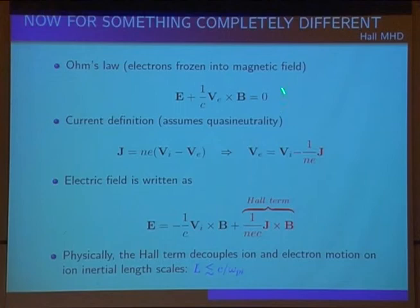So what the Hall term does is it decouples the ions from the electrons. You assume that the electrons are frozen into the magnetic field. E plus VE cross B is zero. Defining J, taking this VE, putting it up here, you then have a different Ohm's law for the ions. It's VI cross B plus J over ne, J cross B over ne C. That's the Hall term. So on length scales, smaller than your ion inertial length, ion motion, electron motion decouple. And so as reconnection occurs, you come inside to C over Omega Pi. Now the ions do something different than the electrons. And this provides a mechanism to set up the dynamics for fast reconnection.